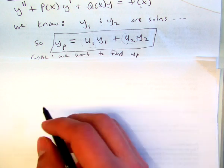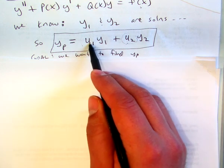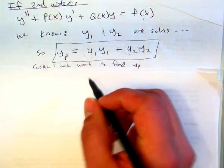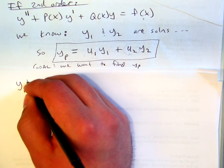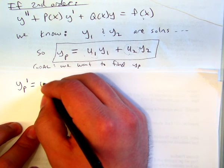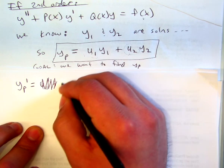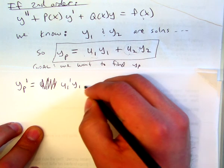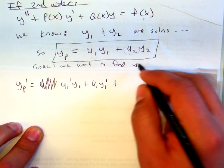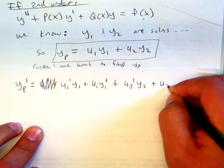All right, so we're going to go ahead and take the particular solution, and we're going to plug it into the differential equation, so we're going to compute the derivatives here. So, first-order derivative using product rule will be u1 prime y1 plus u1 y1 prime, and now for the second term we get u2 prime y2 plus u2 y2 prime.